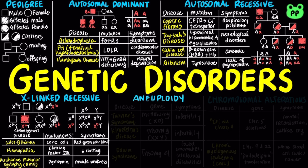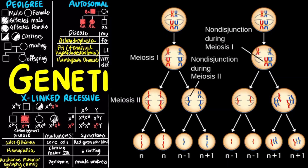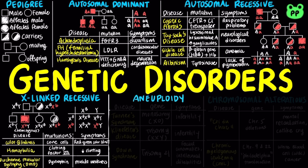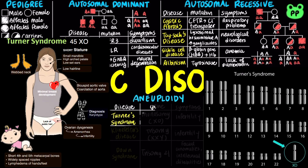Aneuploidy refers to an abnormal number of chromosomes, which is caused by non-disjunction, in which pairs of homologous chromosomes do not separate normally during meiosis. As a result, one gamete receives two of the same type of chromosome and the other gamete receives no copy. A monosomic zygote has only one copy of a particular chromosome. The only viable monosomy is Turner syndrome, which is the monosomy of the X chromosome, resulting in sterile females.